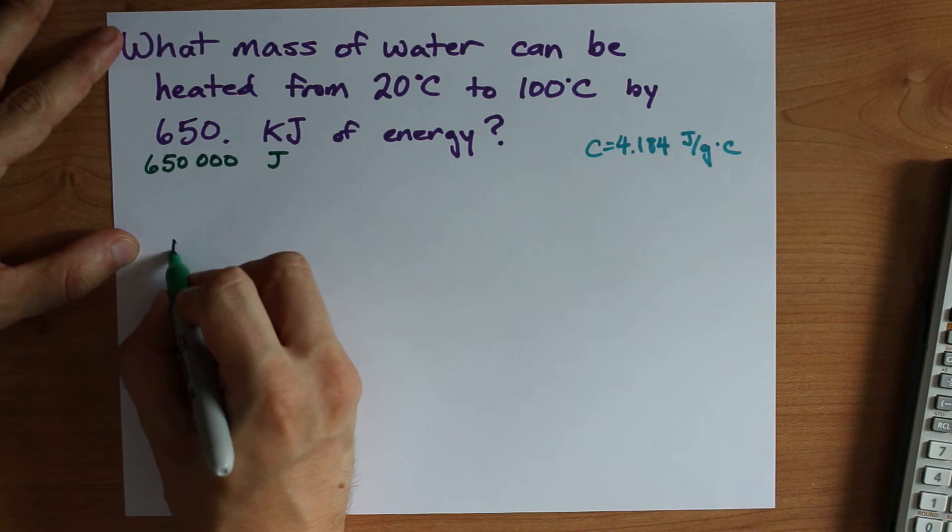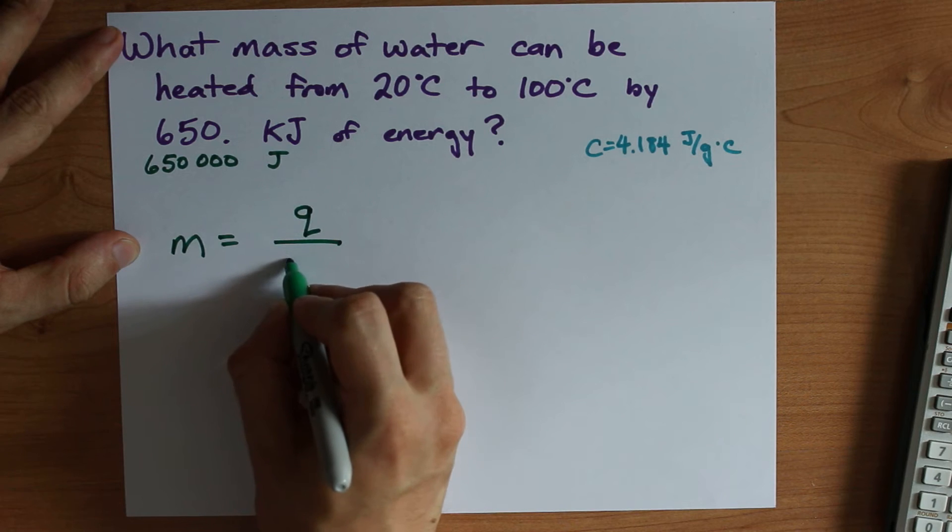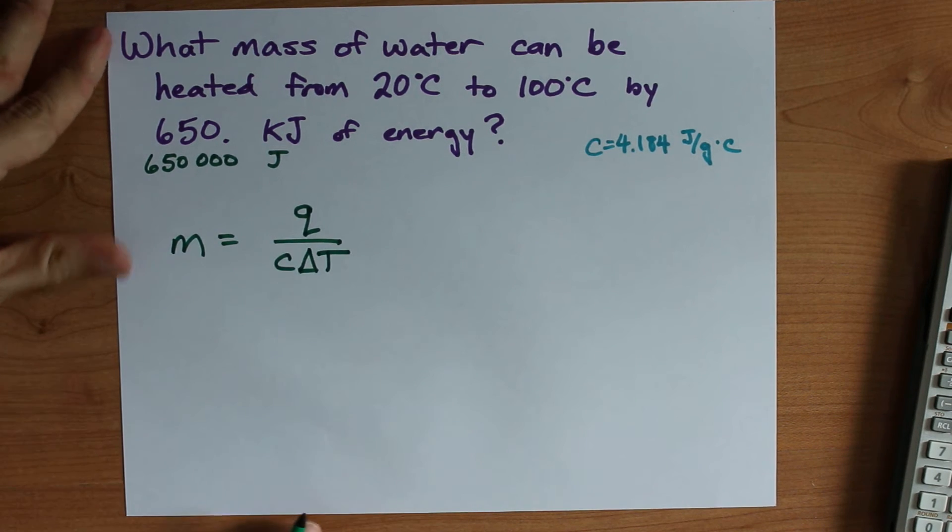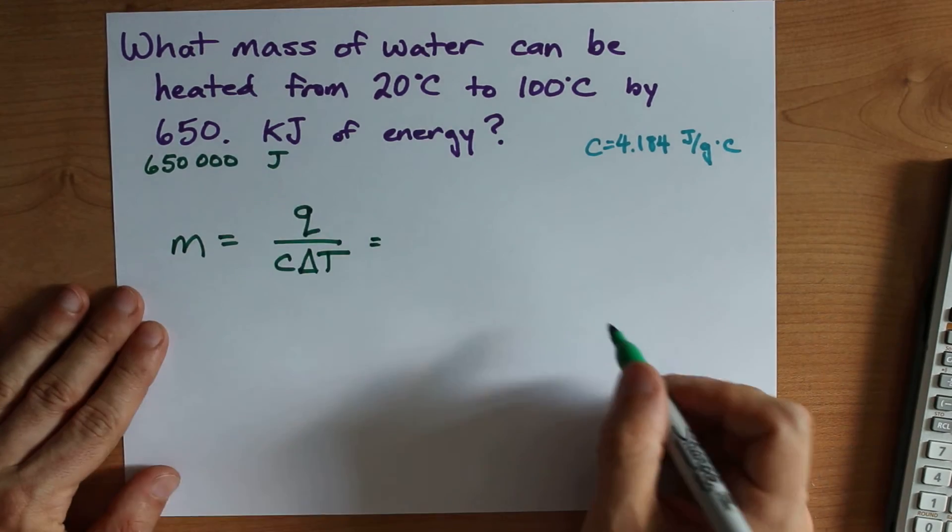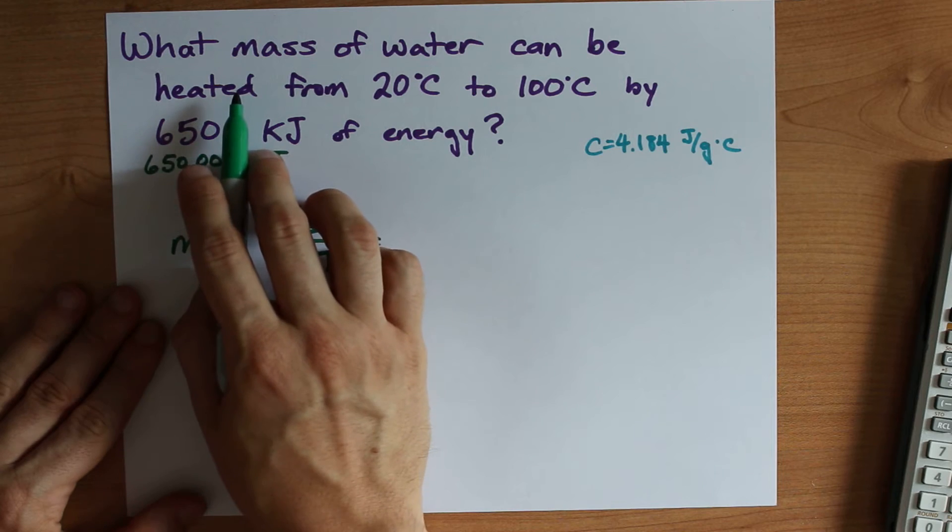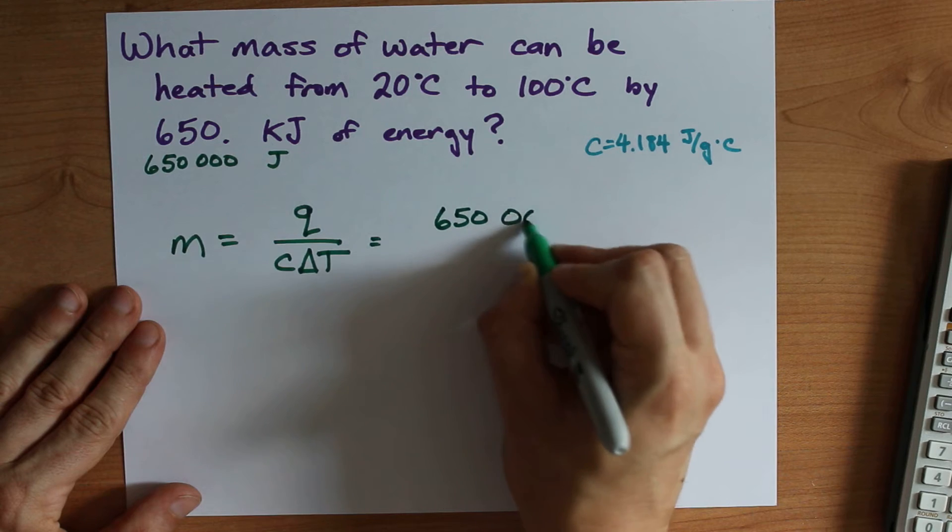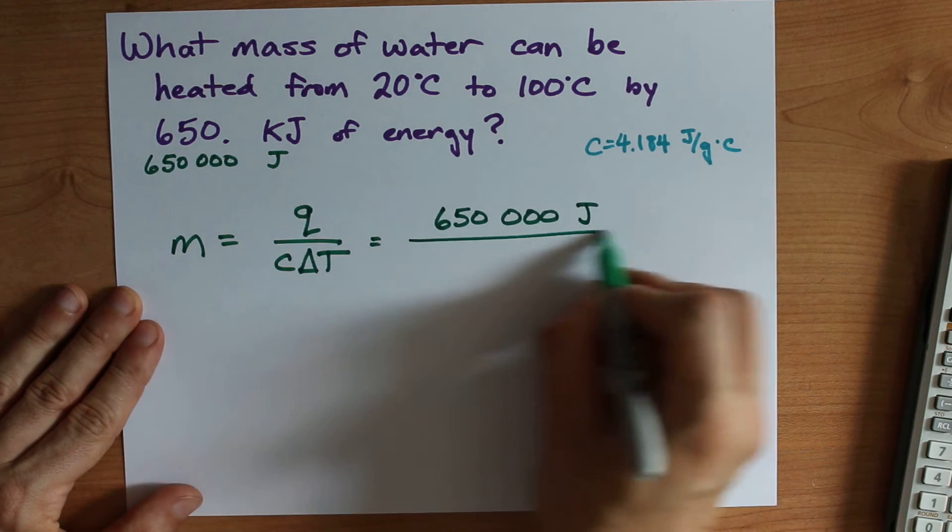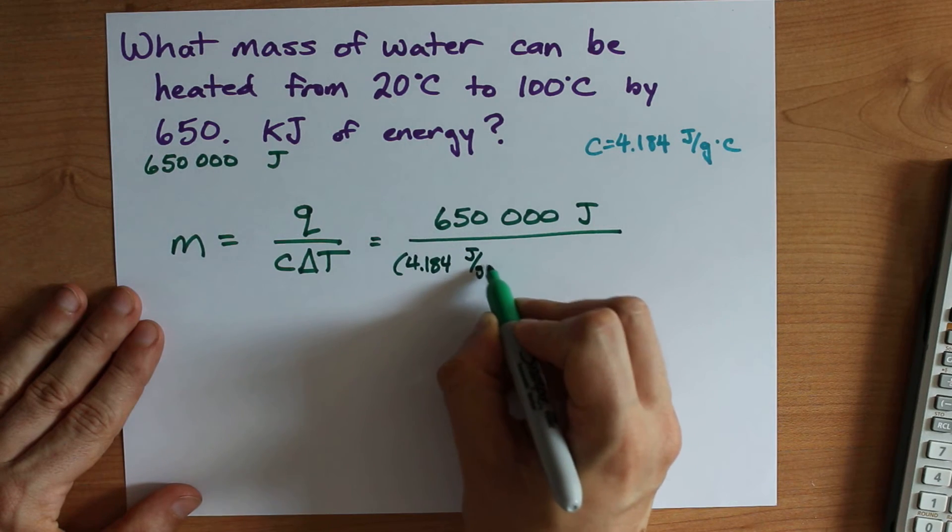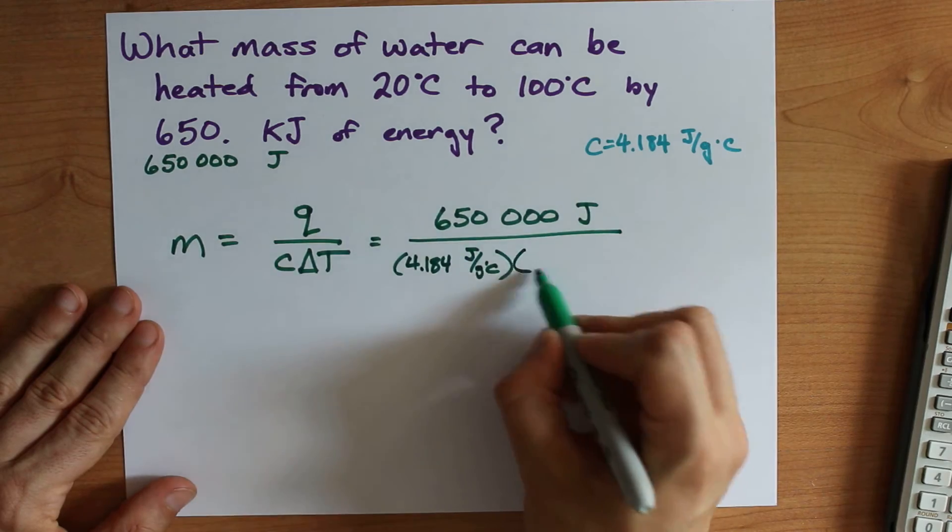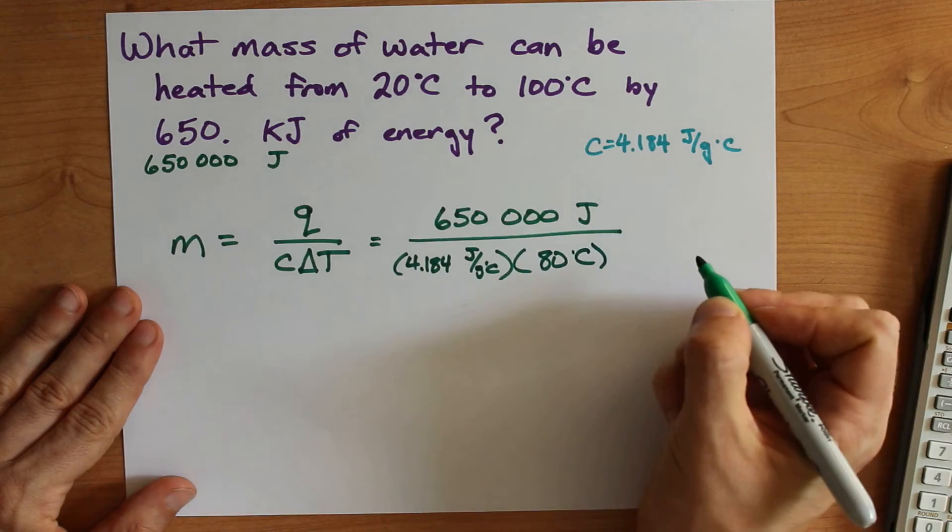To solve for mass in the equation q equals mc delta t, you divide both sides by c and delta t. So I've derived this formula for mass. As long as I'm given an amount of energy, now we are heating water, and it's absorbing 650,000 joules. So I'm going to plug that in with a positive sign. The specific heat capacity of water is 4.184 joules per gram degree celsius, and my temperature is going up by 80 degrees.